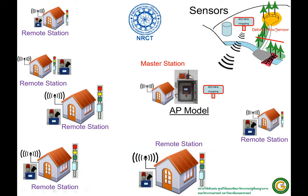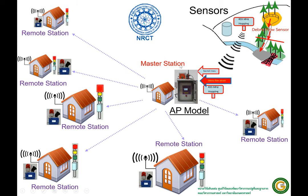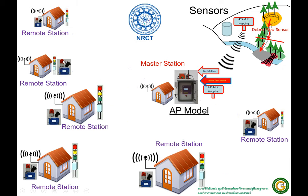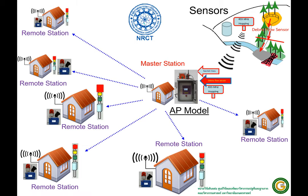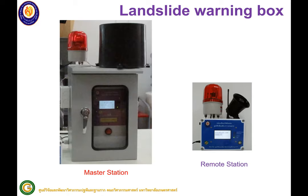This is an example of installing sensors in the village area. We install sensors — for example, rain gauges or debris flow sensors — on the mountain, and if they detect something, they send a signal to the village, to the master station, the head of the village. Then a radio signal is sent to each house in order for them to evacuate in time. This is an example of the landslide warning box, which receives information from the sensor and sends a burst radio signal to remote stations located in each house.